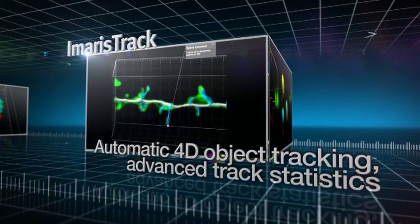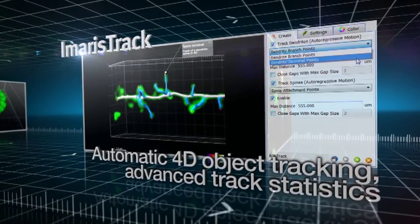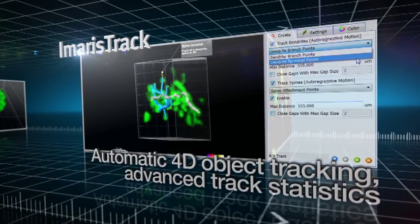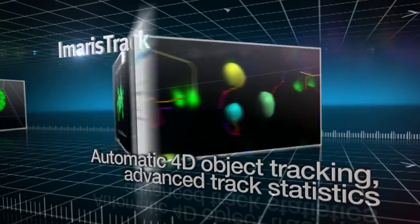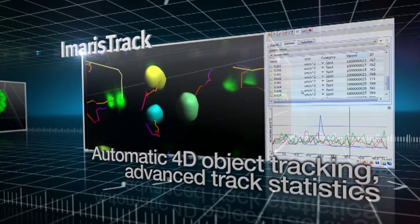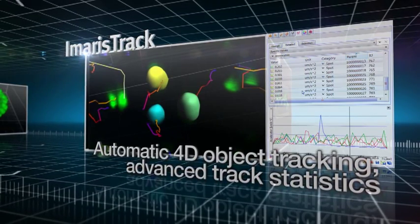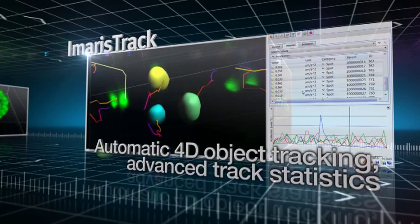Imaris Track is the cutting-edge scientific solution for 3D and 4D object tracking. Monitor, visualize and quantify rapid temporal changes in complex biological systems. Imaris Track lets you tackle challenging processes like dendritic spine modifications and intracellular traffic events.